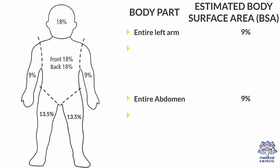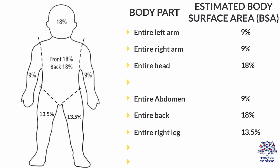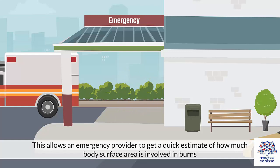In children, the body part area versus estimated body surface is different to account for proportional differences. This allows an emergency provider to get a quick estimate of how much body surface area is involved in burns.